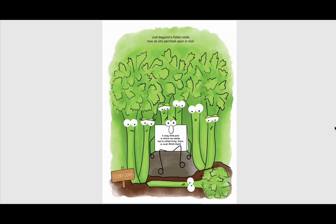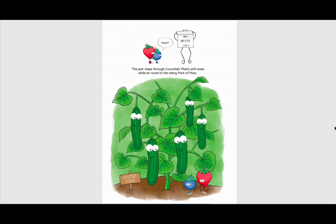Just beyond a falling stalk, clue six sits perched upon a rock. A cozy little pad is where we reside. We're collected snap, snow, or even black-eyed. Peas. Correct. Park of peas. The pair steps through Cucumber Plains with ease while en route to the teeny Park of Peas.